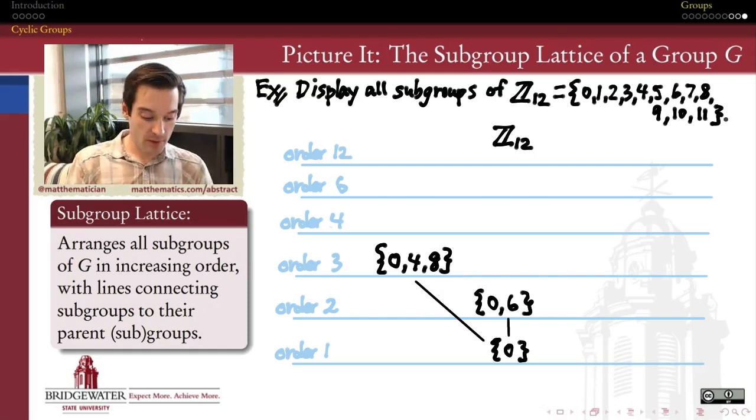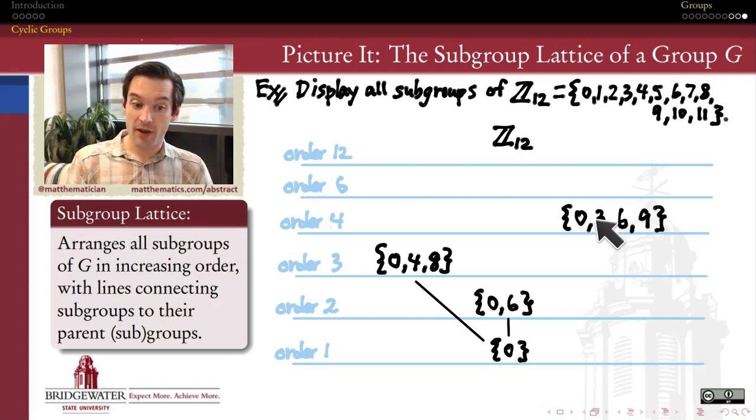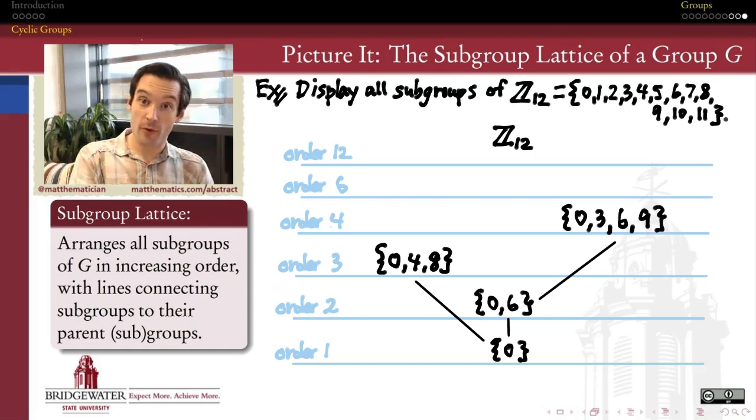How about order 4? If I pick an element of order 4 like 3, then the subgroup that it generates will be a subgroup of order 4 inside of Z mod 12. The only other element of order 4 was 9, and 9 also generates this same subgroup. So that's the only subgroup of order 4. The line that I'll draw connects 0,6 to 0,3,6,9 because this subgroup is a subset of this subgroup.